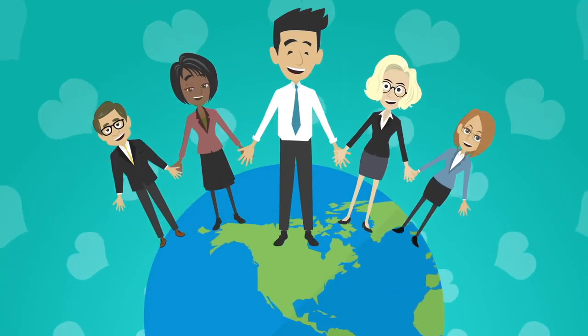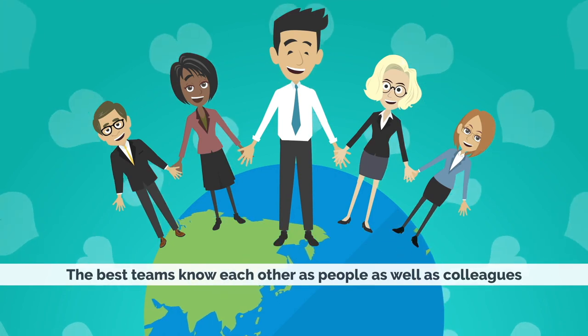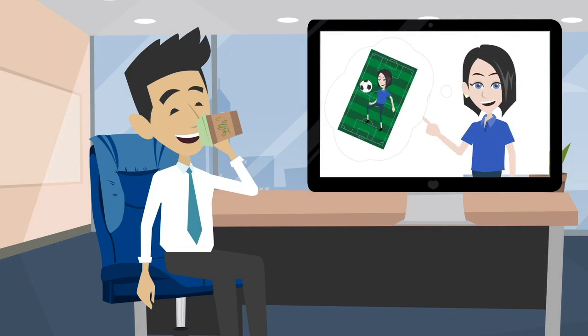Tip 2: learn about each other. I'm a big fan of this regardless of how distributed the team is. The best teams know each other as people as well as colleagues — that builds rapport, accountability, and shows genuine care. It's even more important in a distributed team because it's very easy to be just a name or a resource rather than a human being. Build in a little personal time to conversations — not just all about work — knowing what makes people tick, and what annoys them, helps build real relationships and a successful team.